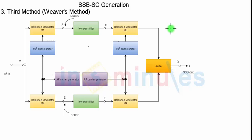After discussing the first two methods, the next method is called the third method. That's the name given because it's actually the third method to generate SSB AC signal. It is also called Weaver's method, named after the scientist who invented it. Let us go through the entire method first and then discuss the advantages and drawbacks at the end. But please keep in mind that we want to avoid two things.